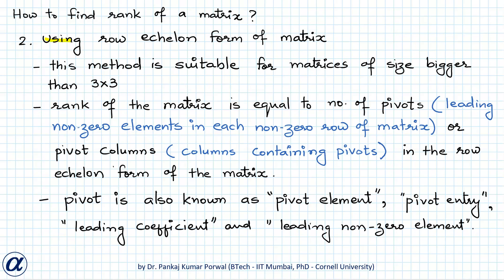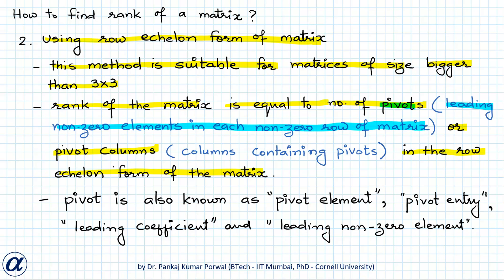The second method to find rank is using the row echelon form of the matrix, which is more suitable for matrices larger than 3 by 3. In this method, the rank equals the number of pivots or pivot columns in the row echelon form. A pivot is the leading non-zero element in each non-zero row of the row echelon form. The pivot columns are the columns containing pivot elements. A pivot is also known as a pivot element, pivot entry, or leading coefficient.